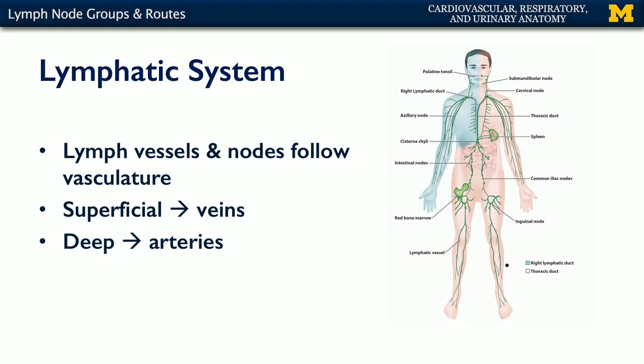As you may remember, the lymphatic system has an asymmetrical distribution of drainage from the body, so we'll find that one half of lymphatic drainage is draining the right upper limb, right thorax, right head and neck, and the other half of lymphatic drainage is draining the remainder of the body.